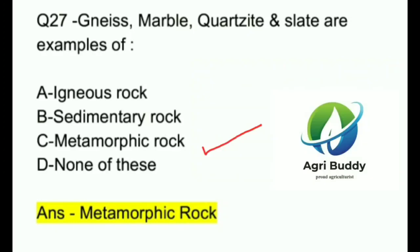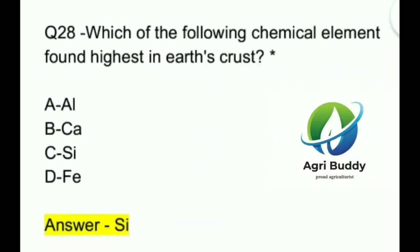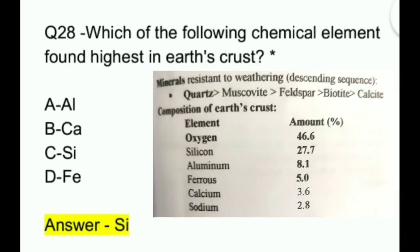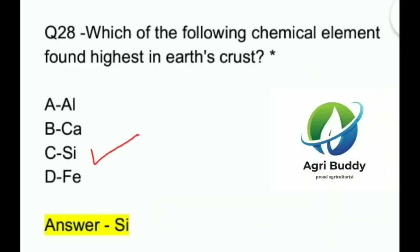Question 28. Which of the following chemical elements is found highest in earth's crust? A. Aluminium. B. Calcium. C. Silicon. D. Iron. And the answer is Silicon.